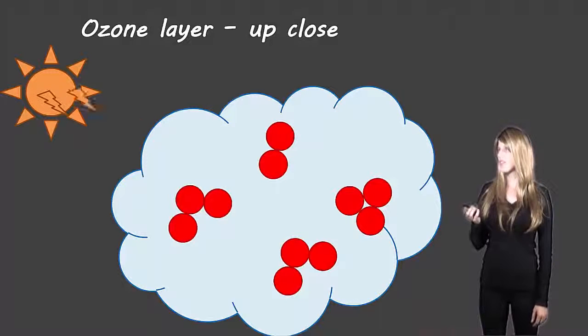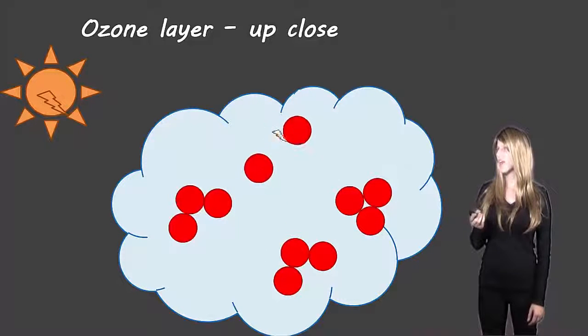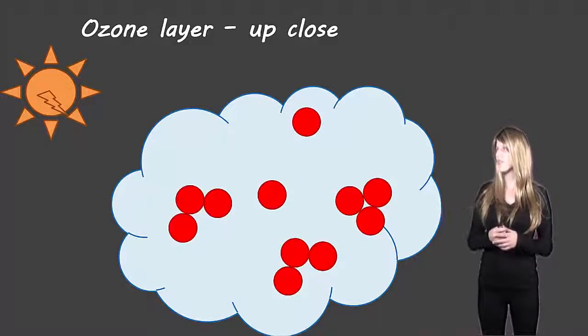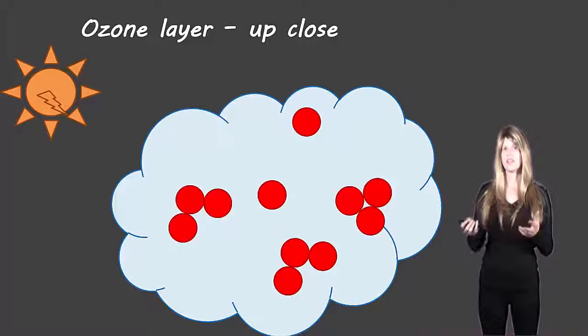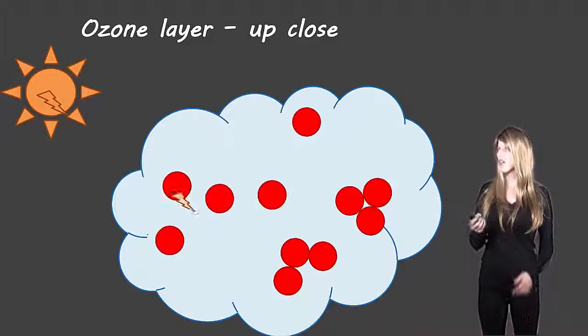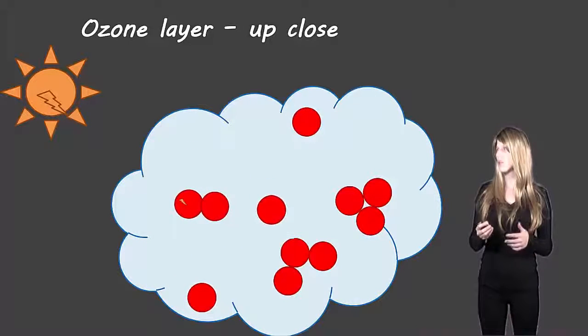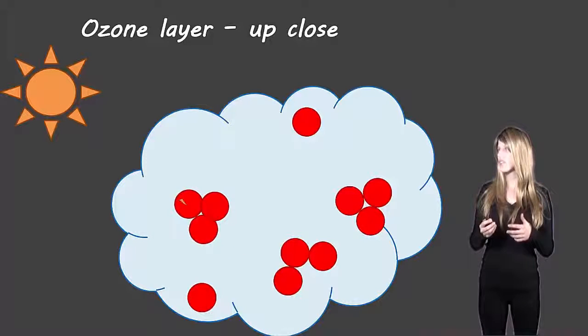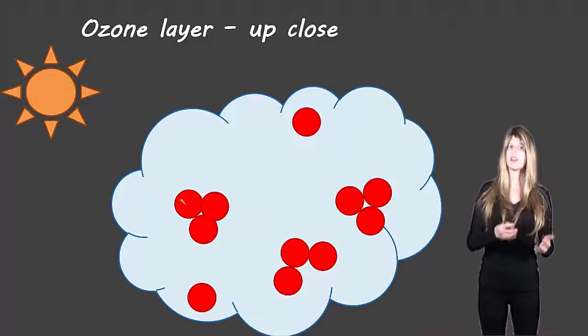So we can see first of all that ultraviolet light will come and it'll break up the oxygen molecule. This is how we're going to end up forming some ozone. So it breaks up the oxygen molecule. It can also hit an ozone molecule and break it into oxygen molecule and oxygen atom.